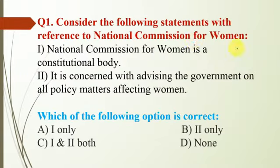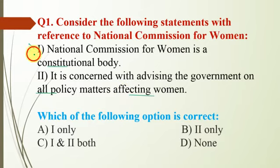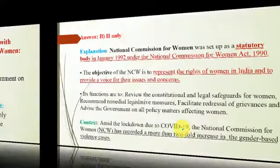Question number 1 is with reference to the National Commission for Women. Statement 1: National Commission for Women is a constitutional body. Statement 2: It is concerned with advising the government on all policy matters affecting women. Statement 1 is incorrect and statement 2 is correct, so the option will be B — second only.